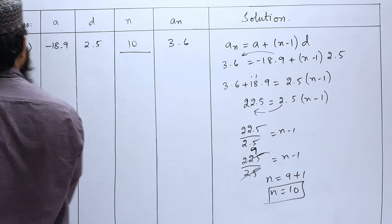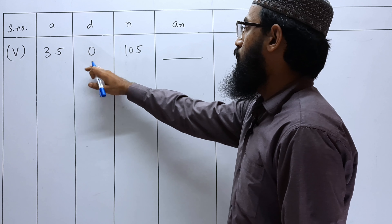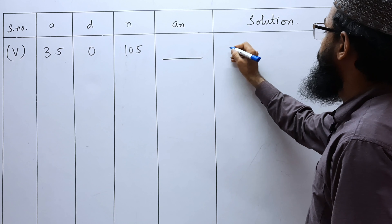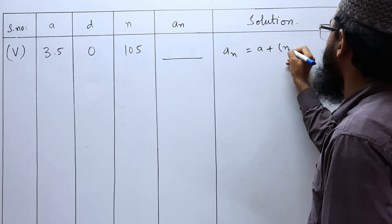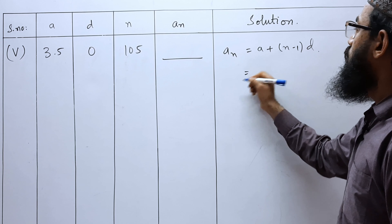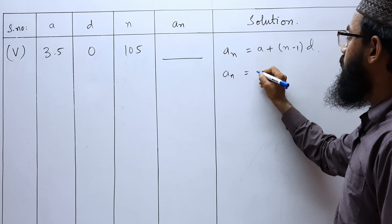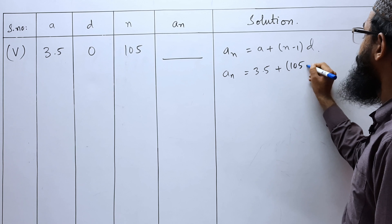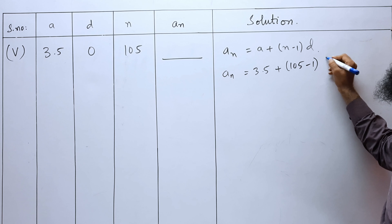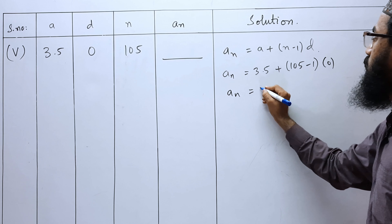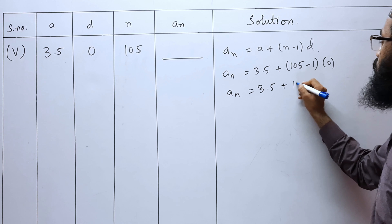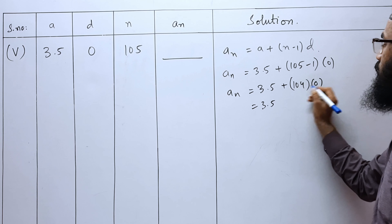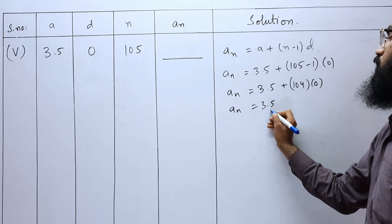Fifth bit: first term is 3.5, common difference is 0, N is 105, and we have to find the nth term. Using the nth term formula: AN equals A plus (N minus 1) into D. So, AN equals 3.5 plus (105 minus 1) into 0. Since D is 0, 104 into 0 is 0. Therefore, AN is equal to 3.5.